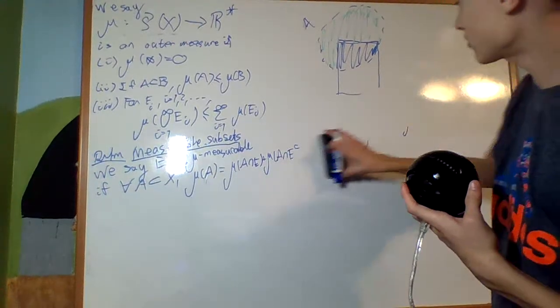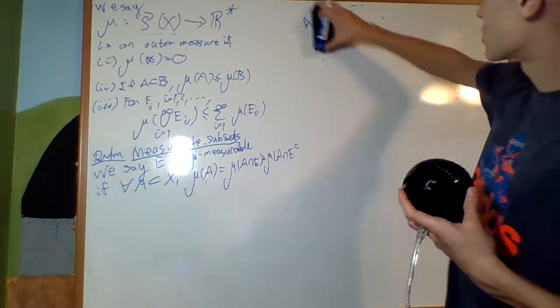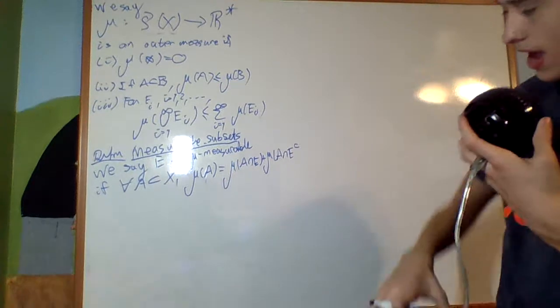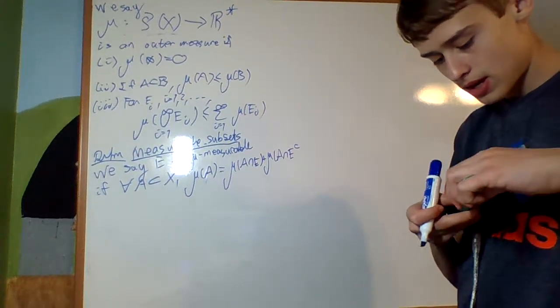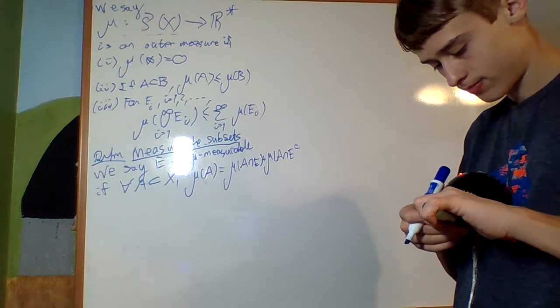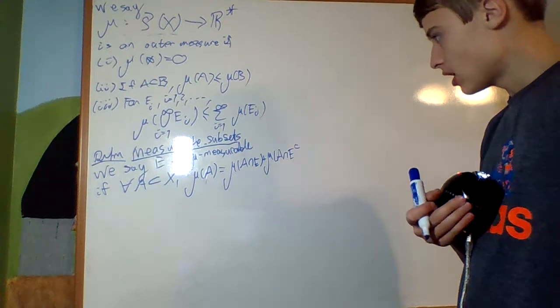This is the intuition behind it. That's what a measurable set is. For any A, you can split it up. It splits it up nicely in respect to the measure.